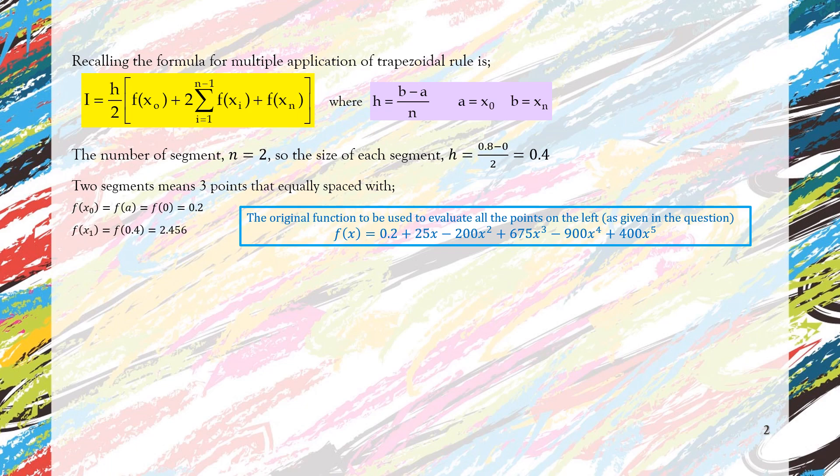And then we calculate the second point where the point is in the middle of the problem, in the middle of the segment. So f(x1) equal to f(0.4), so we substitute 0.4 into the function, we will get 2.456.